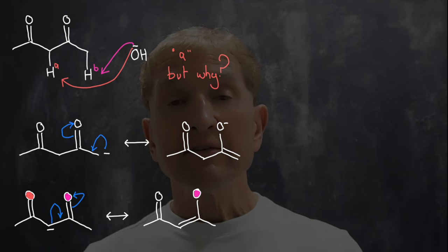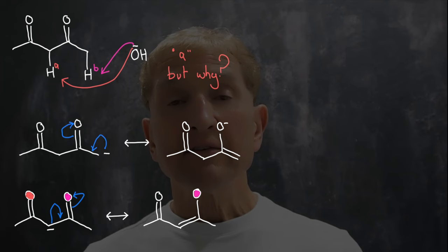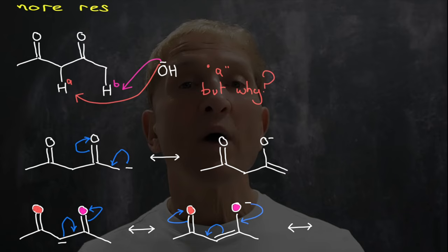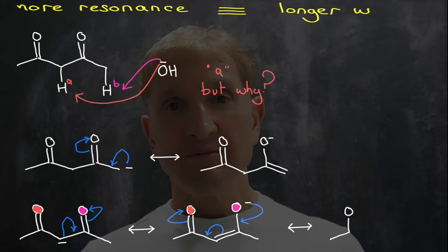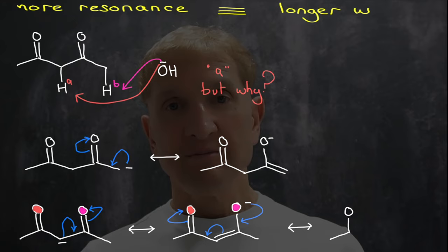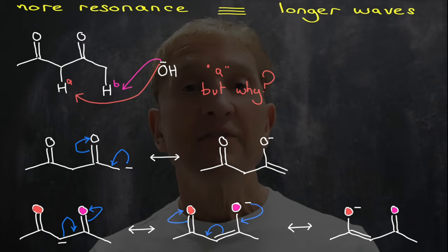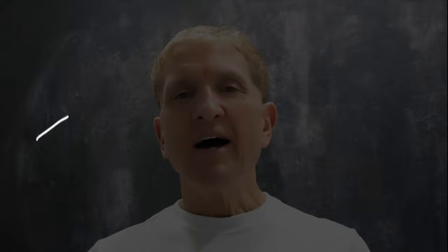However, if I deprotonate on the methylene between the two carbonyls, then the negative charge can oscillate between one oxygen, back to the carbon, and then on to the other oxygen. In resonance, the longer the path length, the longer the wavelength of the energy. Long wavelength energy is lower, so that's the lower, more stable way to form the anion. More stable anions give you more acidic behavior. The methylene is more acidic than the terminal methyl.